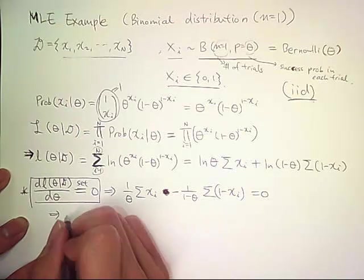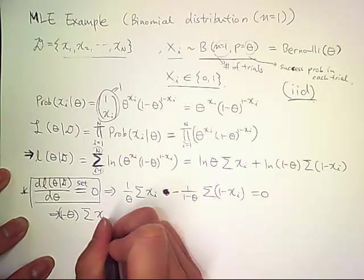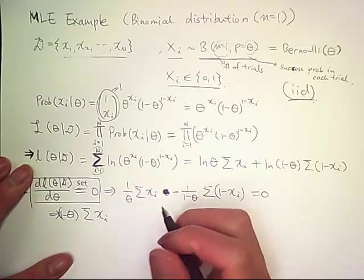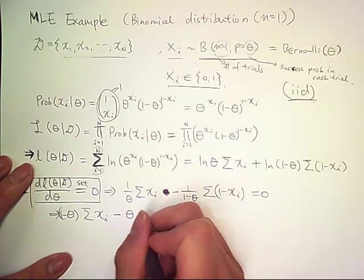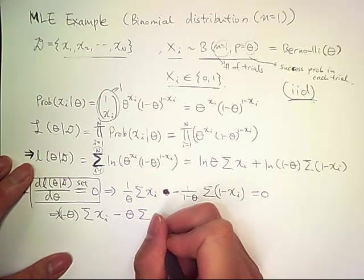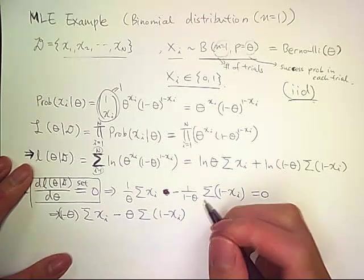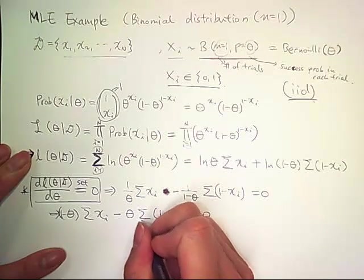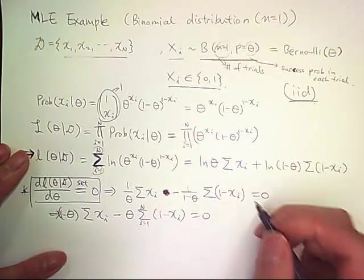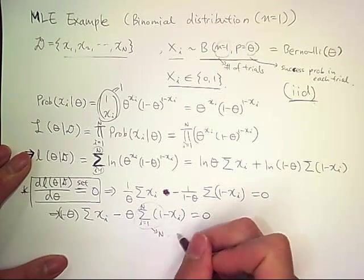Then you get 1 minus theta times sum of x sub i minus theta times sum of 1 minus x sub i equals zero. So we're summing over i equals 1 to n. So this part becomes n.